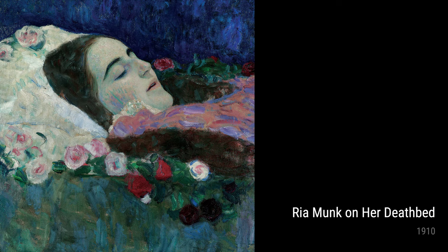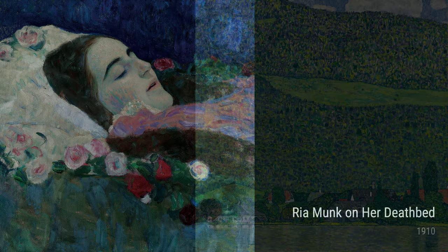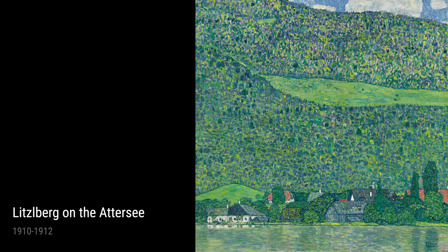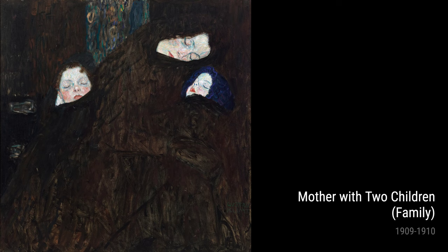One of Klimt's notable works, Ria Monk on Her Deathbed, created in 1910, reflects his contemplation on mortality. This painting portrays a young woman at the end of her life, capturing the vulnerability and emotional depth of the human experience.